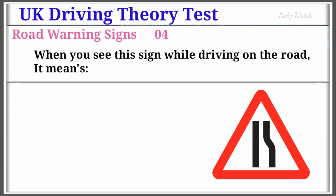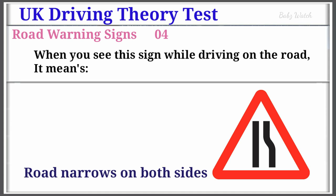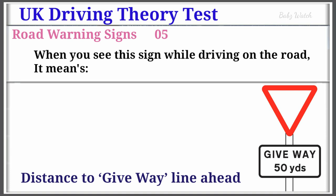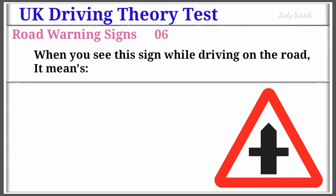UK Driving Theory Test Road Warning Sign Number 4: When you see this sign while driving on the road, it means Road Narrows on Both Sides. Warning Sign Number 5: When you see this sign while driving on the road, it means Road Narrows on Right (if symbol reverse). Warning Sign Number 6: When you see this sign while driving on the road, it means Crossroads.